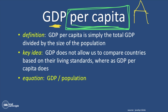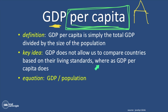That's where GDP per capita comes in, because GDP per capita is simply the total gross domestic product of a country divided by the size of the population. Gross domestic product does not allow us to compare countries based on their living standards, because if there are more people, they're going to produce more things. Therefore, we divide it by the population, and we end up with the ability to do that — which is what GDP per capita does.